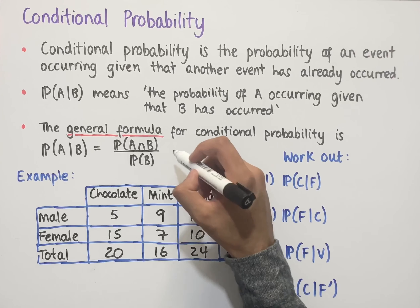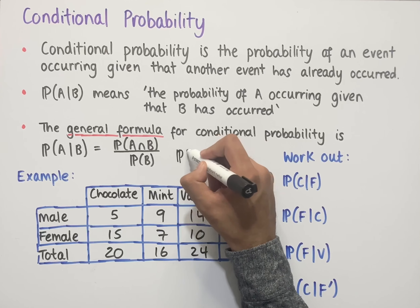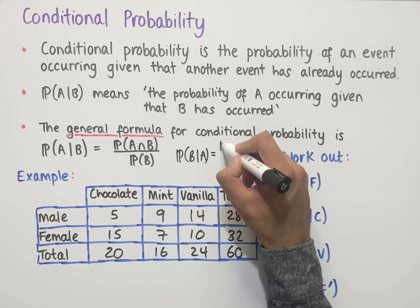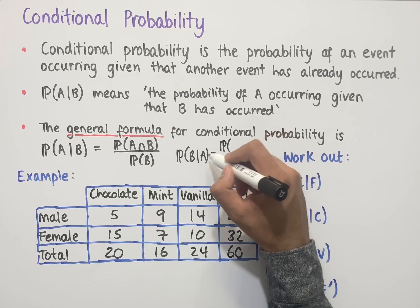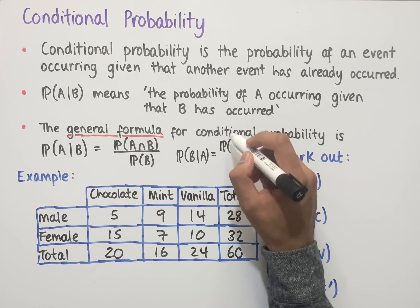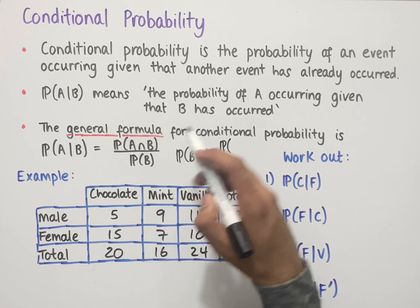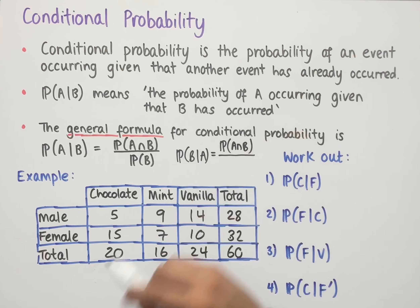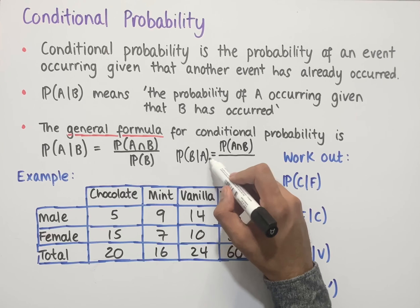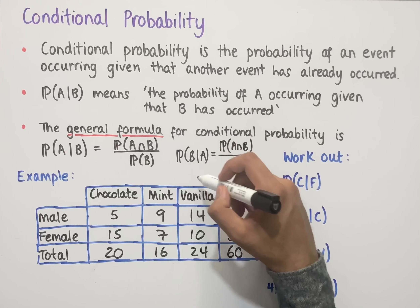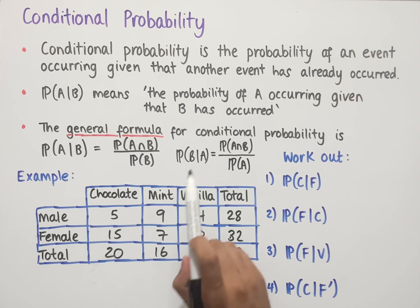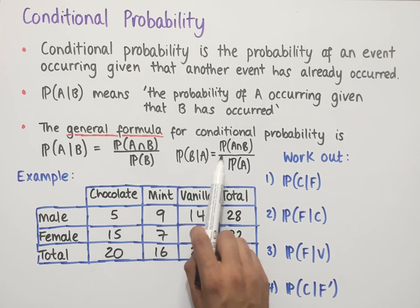For instance, if we had the probability of B given A, we would have the probability of B intersect A divided by the probability of A, since we look at the letter after the given line. Note that B intersect A is the same as A intersect B. Notice how these two notations are different and result in two different formulas.